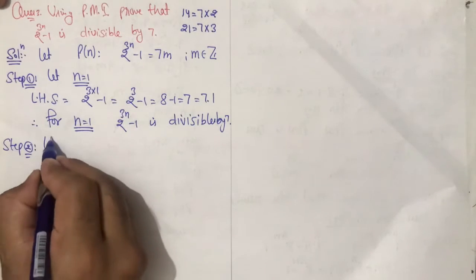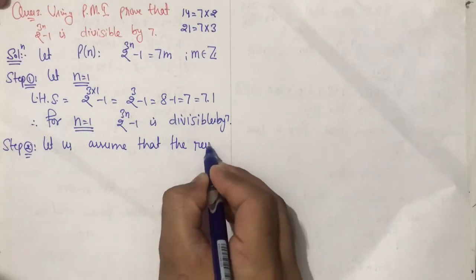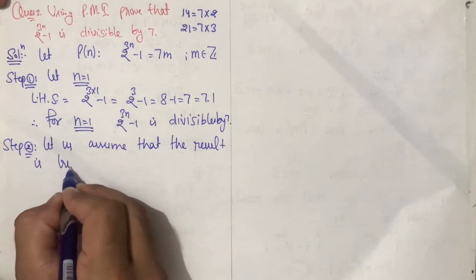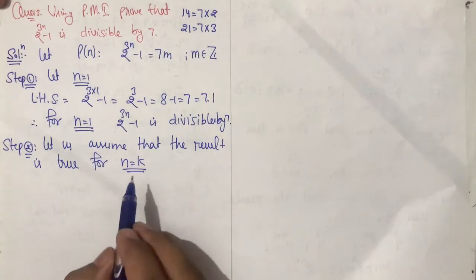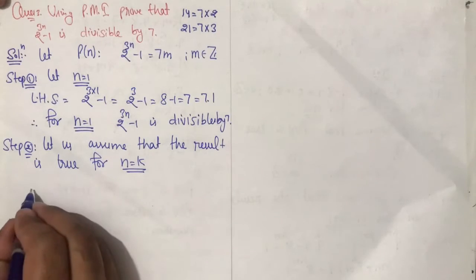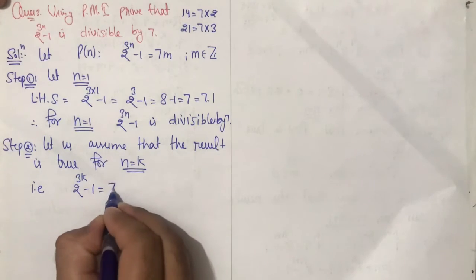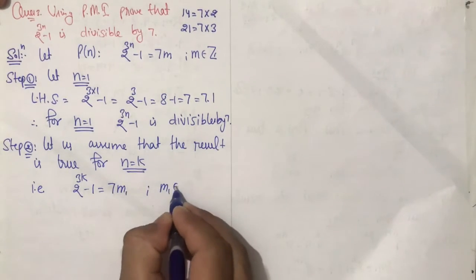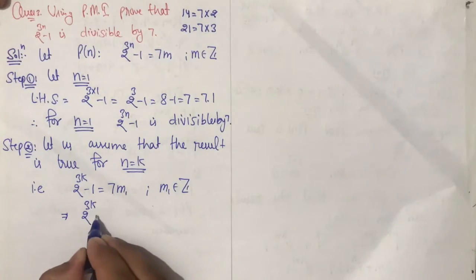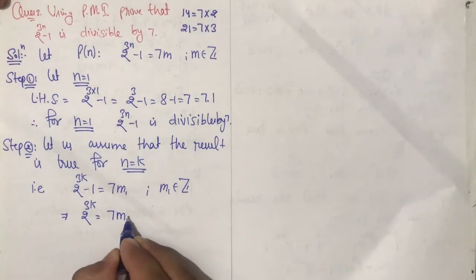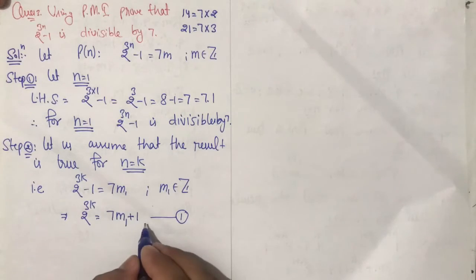Step 2: Let us assume that the result is true for n equals to k. हमने मान लिया कि किसी n की value k के लिए हमारा result true है, that is 2 raised to power 3k minus 1 is equal to 7 into m1, where m1 belongs to the set of integers. यहां से हम यह भी कह सकते हैं कि 2 raised to power 3k की value है 7m1 plus 1. इसको equation first नाम दे सकते हैं।